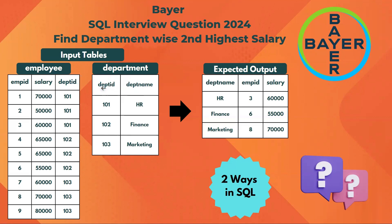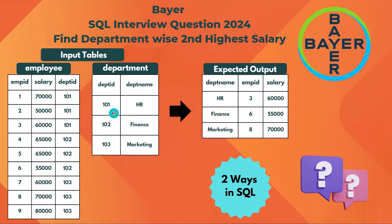If you look into department HR, it is department 101. For 101 we have three records. Out of all those three records, we can see the second highest salary is 60,000 — out of 70,000, 50,000, and 60,000. So the second highest salary is 60,000 for employee D3, and that is what we need to get in the output.